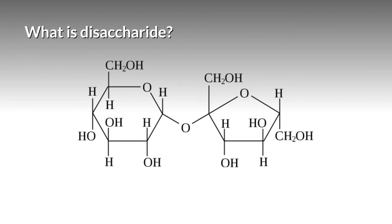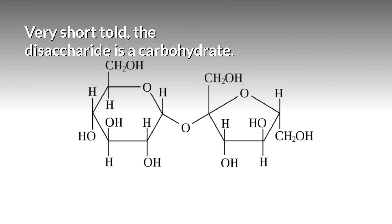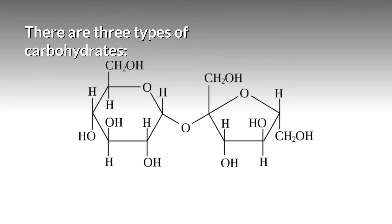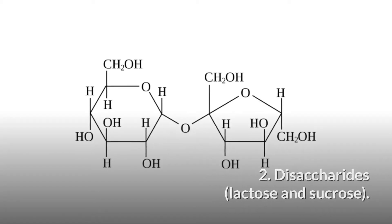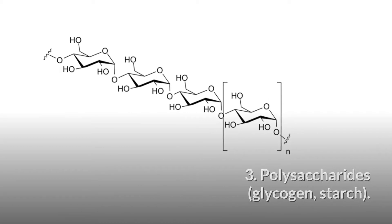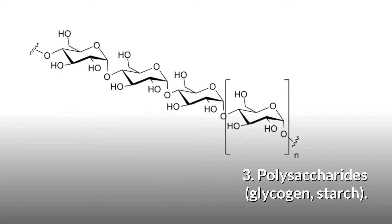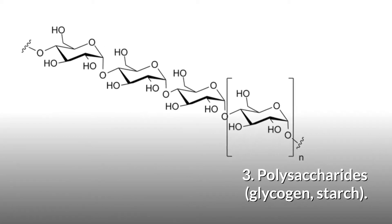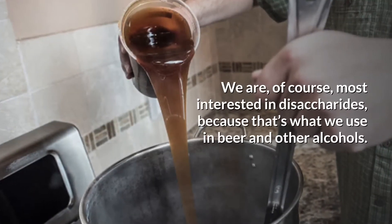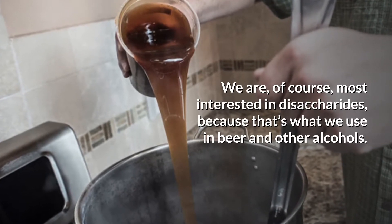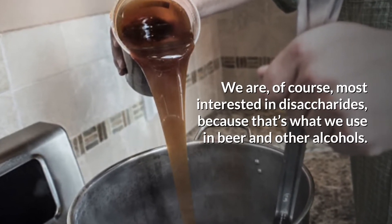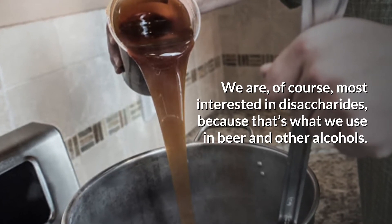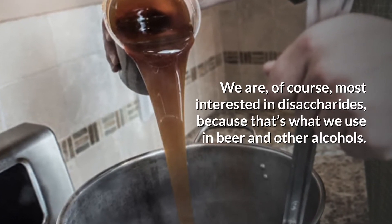What is a disaccharide? In short terms, a disaccharide is a carbohydrate. There are three types of carbohydrates. One: monosaccharides — glucose and fructose. Two: disaccharides — lactose and sucrose. Three: polysaccharides — glycogen and starch. We are, of course, most interested in disaccharides, because that's what we use in beer and other alcohols.